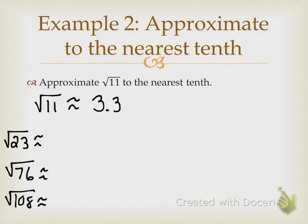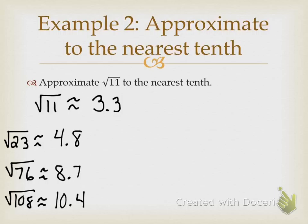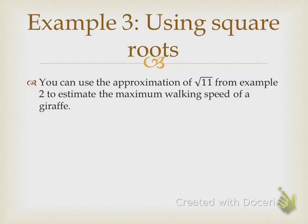Square root of 23 is approximately 4.8 — because it's 4.79, the 9 rounds it up to an 8, so 4 and 8 tenths. What about the square root of 76? 8 and 7 tenths. And what about the square root of 108? 10 and 4 tenths — because the 9 rounds the 3 up. So that's it for example 2.